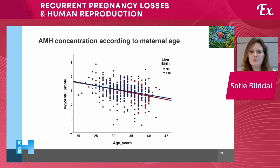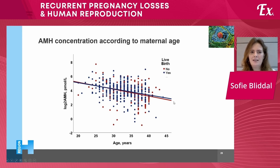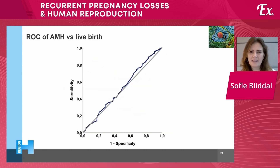When comparing those who had another pregnancy loss to those with a live birth and looking at the AMH concentrations, both groups had a very nice decline with age, but essentially identical AMH levels between those who had live births and those who did not. The ROC curve also shows very poor discrimination to detect live births according to AMH levels.